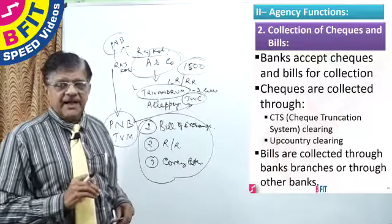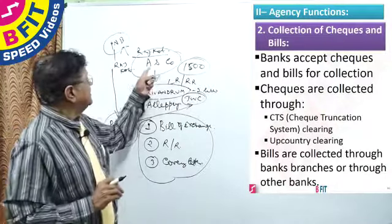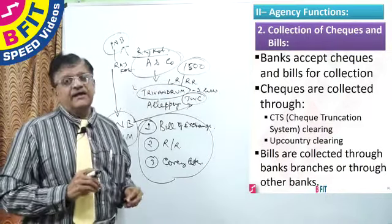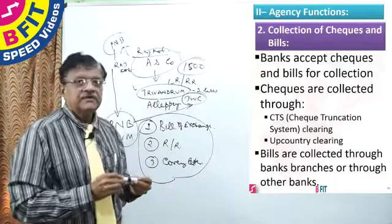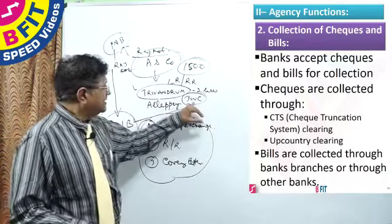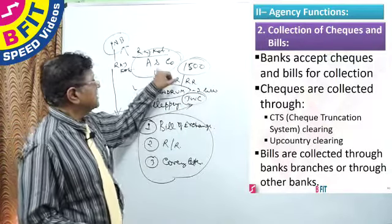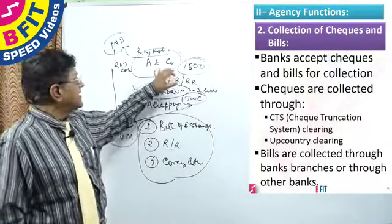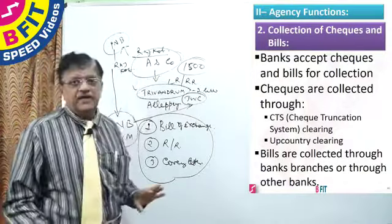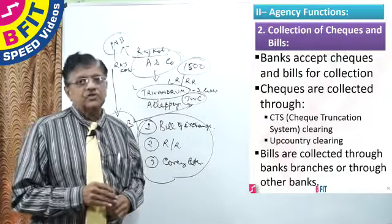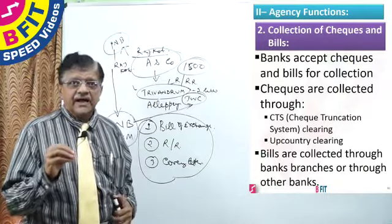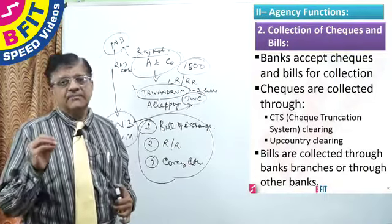Similarly, assuming the same transaction comes through a check — this Trivandrum Watch Company sends a check for 2 lakhs — they will deposit it with Punjab National Bank, and Punjab National Bank will collect it on behalf of A and Company. Not only bills but checks are also collected. So, collection of checks and bills is one of the other agency functions of banks.